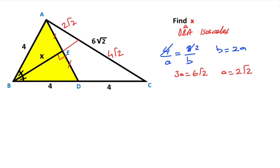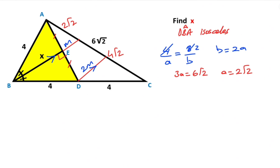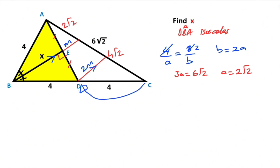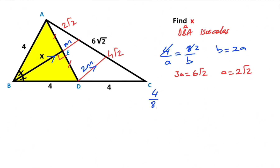Next step: if you draw a parallel line to line segment BE like this, notice that this triangle and this triangle are similar. So if it is M, that means here must also be equal to M. Likewise, this triangle and this triangle are similar. Therefore, 4 over 8 — this length — must be equal to M over X plus M.